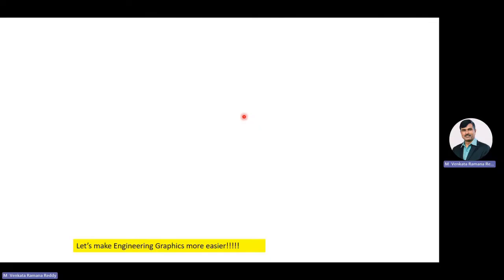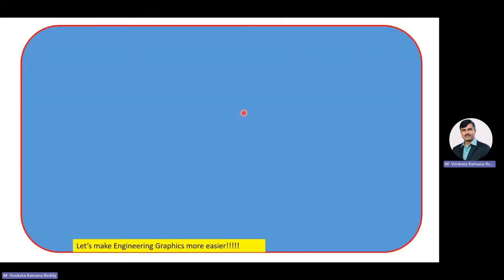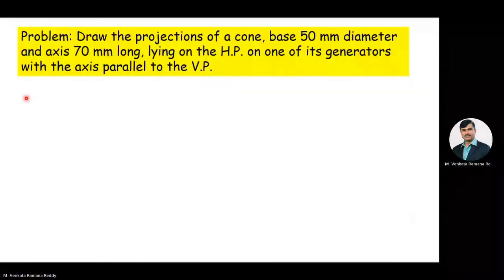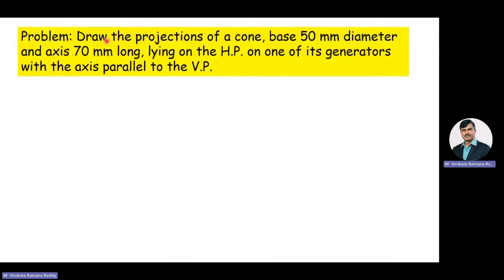Hello everyone, we are into the discussion on the subject engineering graphics. Under engineering graphics we are going to discuss a topic called projection of solids. We are going to solve a problem on axis inclined to one and parallel to another. This is the sixth solved problem. The given problem is: draw the projections of a cone, base 50 mm diameter and axis 70 mm long, lying on the HP on one of its generators with the axis parallel to the VP.